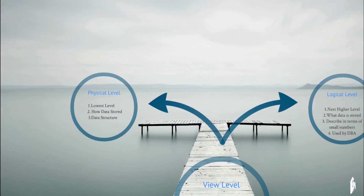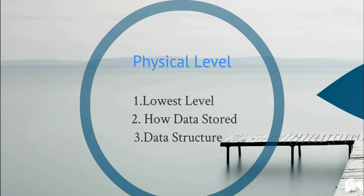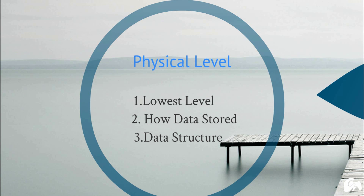There are three types of abstraction. The first one is the Physical Level. This is the lowest level of abstraction. In this particular level, it describes how the data is stored into the database — how many bits are consumed by a statement, and what should happen in the database when a statement gets executed. The entire database is described in detail at the physical level.